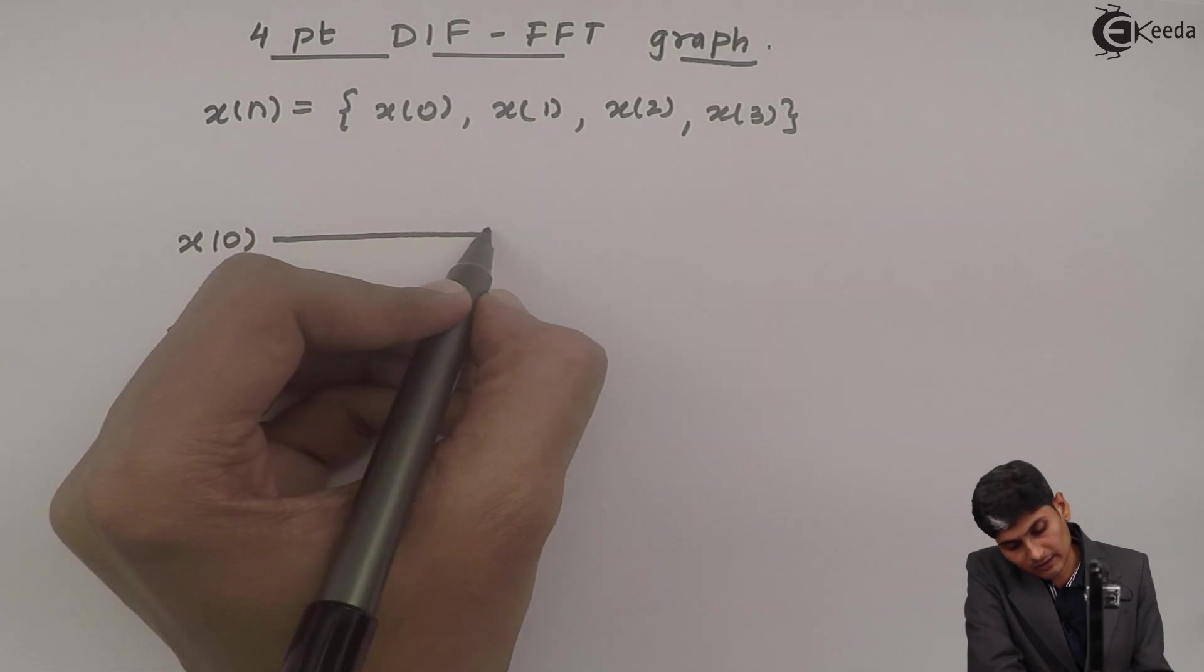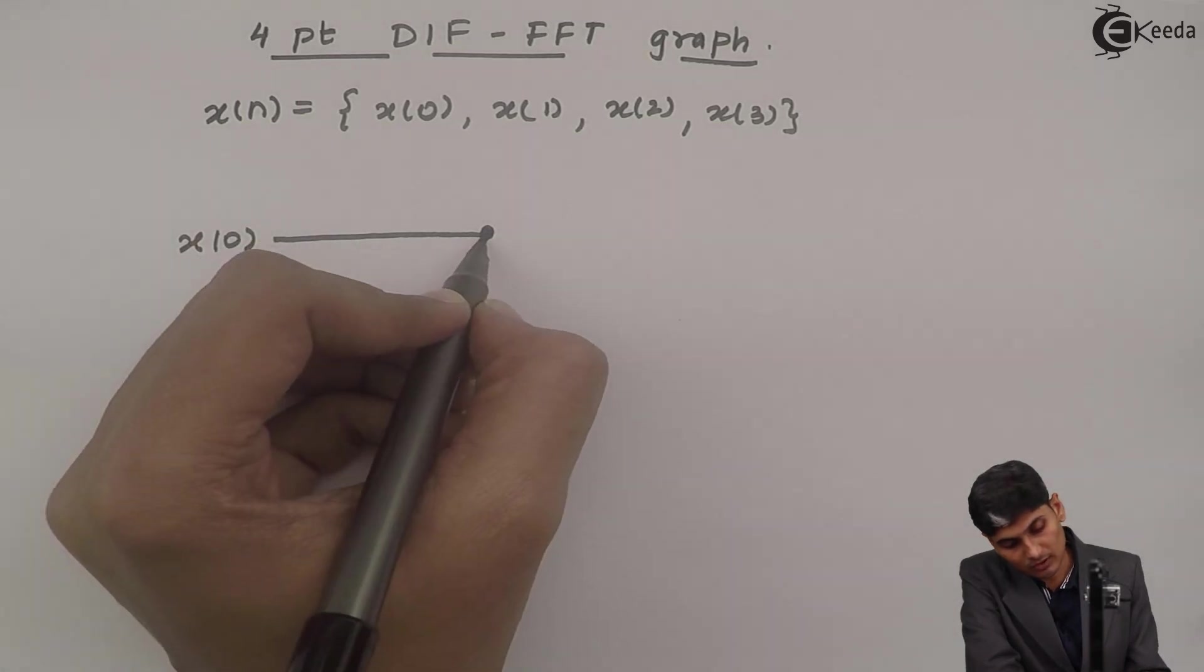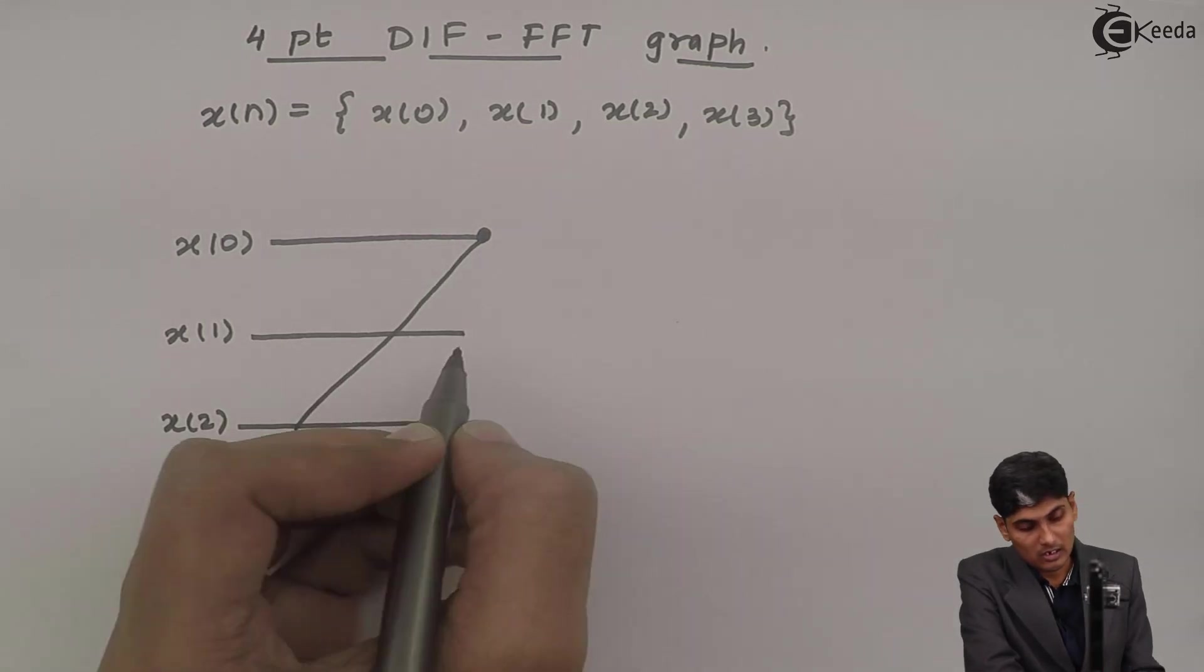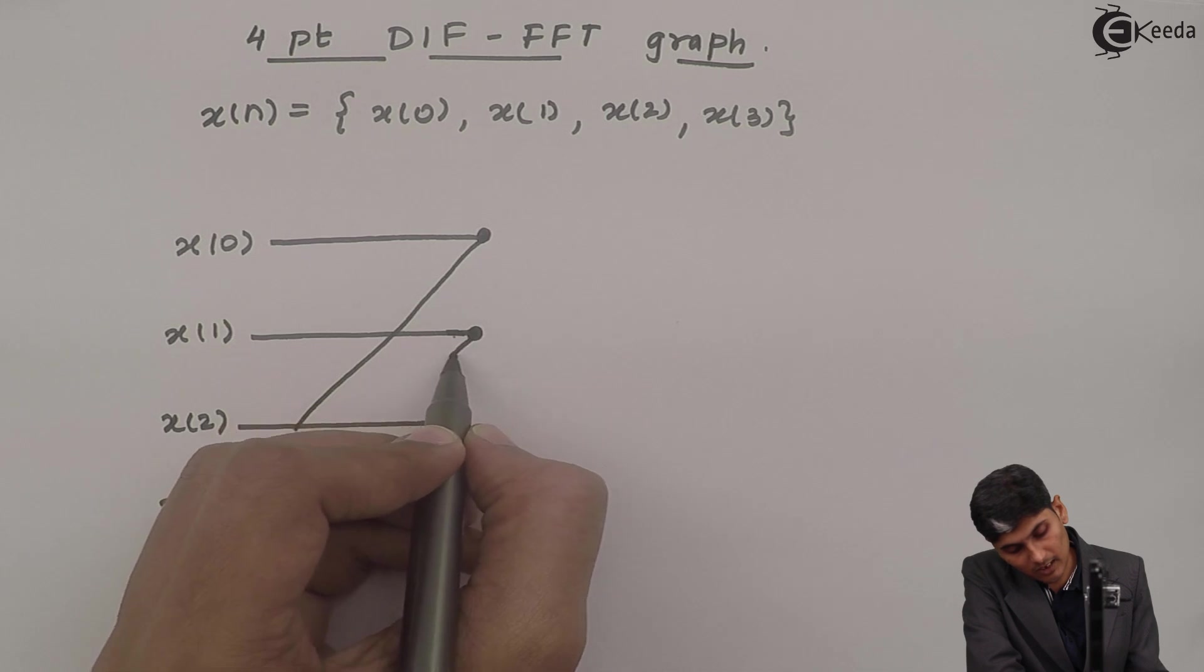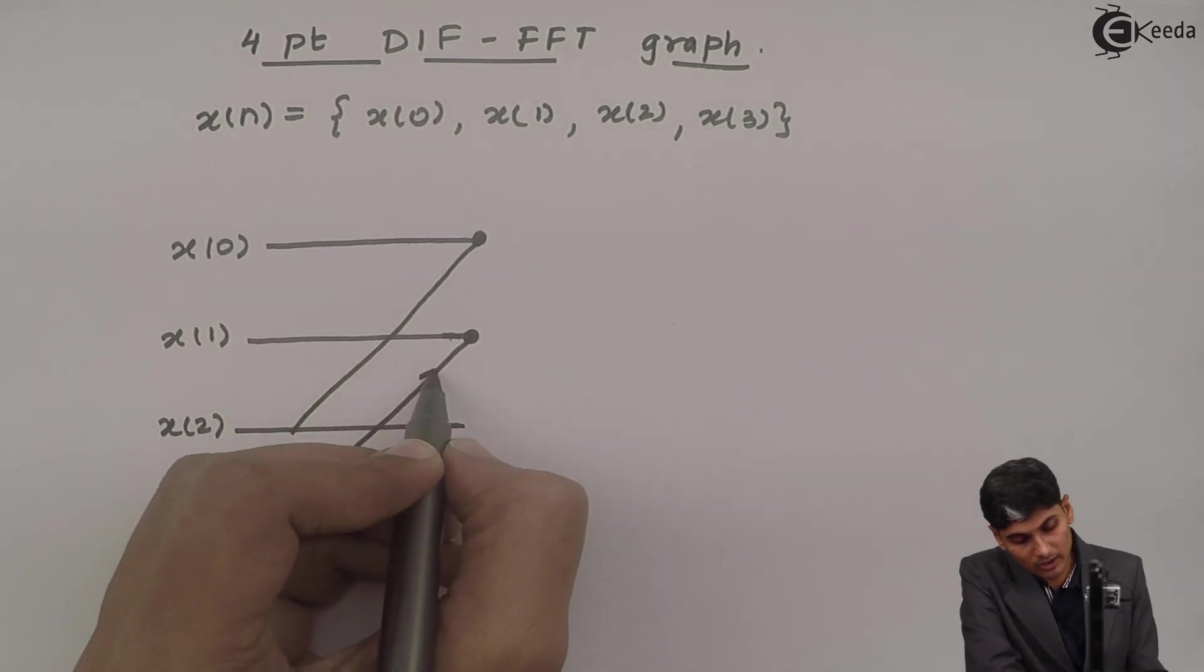And at this junction node, I will add the first value with the third value. So the first value will get added with the third value. At the second point, the second value will get added with the third. So whenever I am going up, I am going to add the two samples.